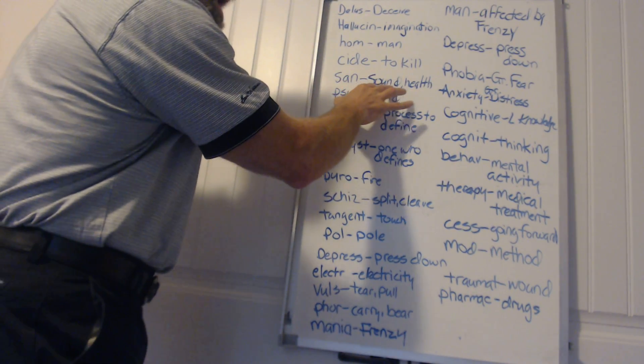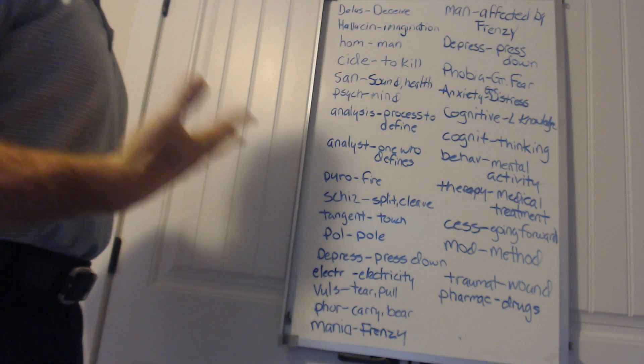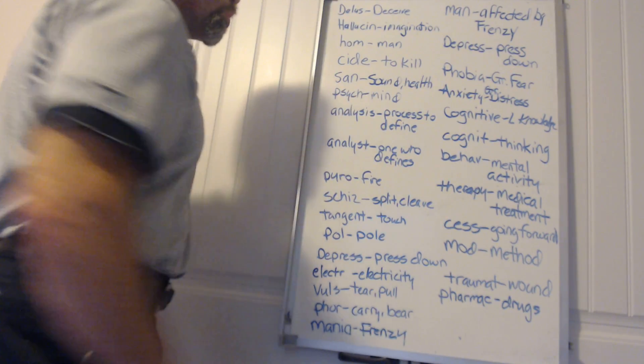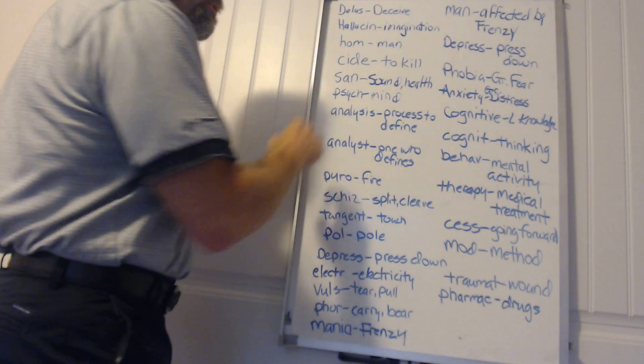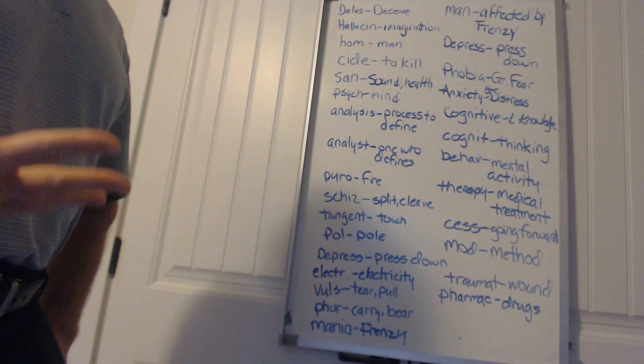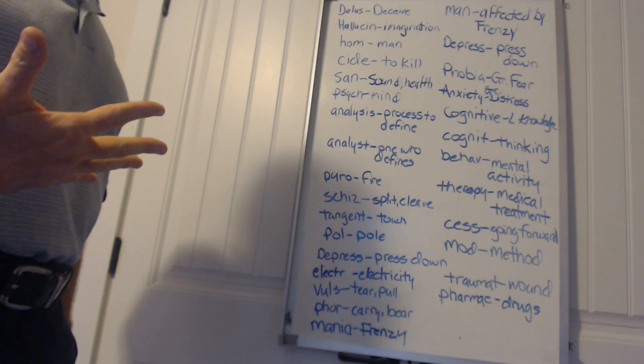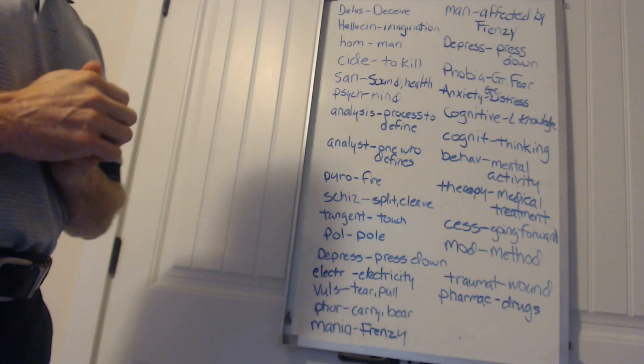Psycho - we've already talked about that. Psych means soul or mind. Analysis is a process to define, like psychoanalysis, a type of psychological therapy in which the patient ultimately speaks with the therapist, who is called a psychoanalyst, one who defines.